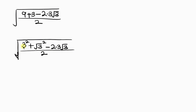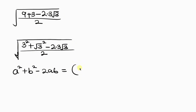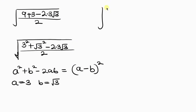Now notice what I have on the numerator. What I have on the numerator looks exactly as A squared plus B squared minus 2AB. An expression like this is a perfect square, which is written as A minus B, all squared. That means we can write this in this form. Comparing, you see that A is 3 and B is the square root of 3. So this expression will be 3 minus the square root of 3, all squared.